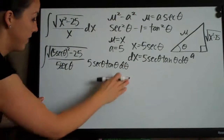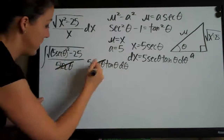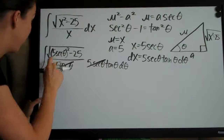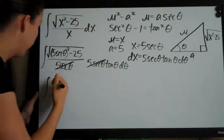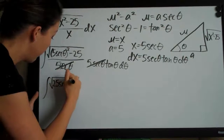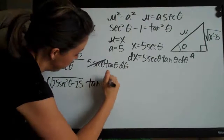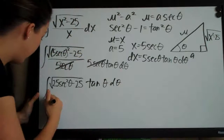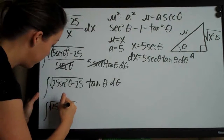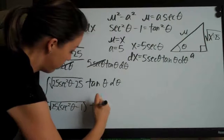Now that we've substituted, we need to simplify. First, we can cancel out the 5 secant theta because we have it in both the denominator and numerator. Then we simplify what's under the radical: squaring 5 secant theta gives 25 secant squared theta minus 25, multiplied by tangent theta d theta. We then factor out 25 to get the square root of 25 times secant squared theta minus 1, times tangent theta d theta.